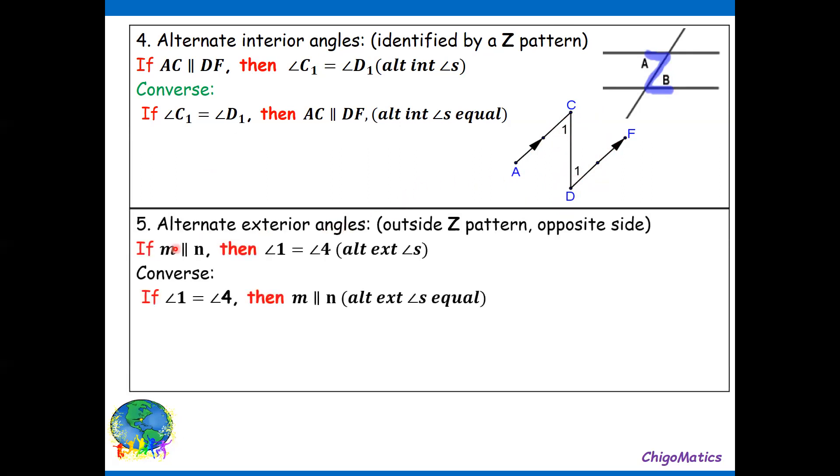Number five, alternate exterior angles. Outside Z pattern, opposite side. All what you are saying is outside, that means the two parallel lines, the angle should be outside them and on the opposite side. So we are simply saying, if M and N is parallel to each other, then we can conclude that angle 1 is equal to angle 4. And its converse: if angle 1 is equal to angle 4, then M and N are parallel lines.